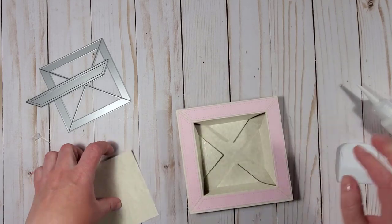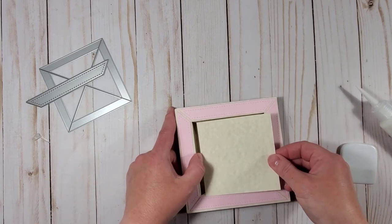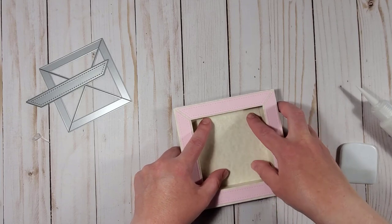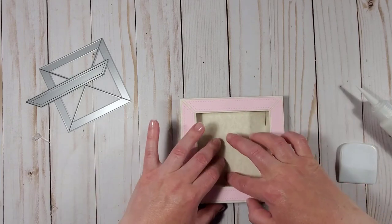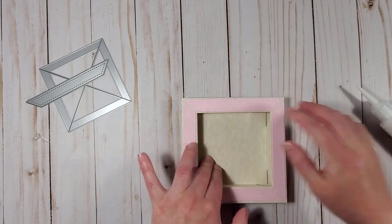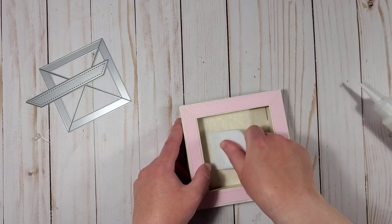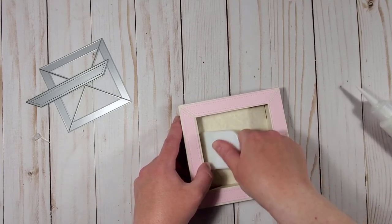I will apply some liquid glue to one of the triangular sections and I will glue my paper piece in there like so.